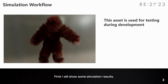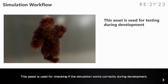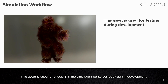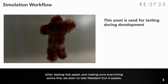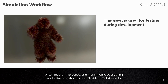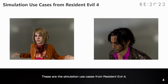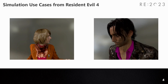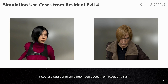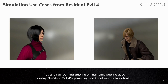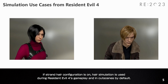First, some simulation results will be shown. This asset is used for checking if the simulation works correctly during development. After testing this asset and making sure everything works fine, we start to test the Resident Evil 4 assets. These are the simulation use cases from Resident Evil 4, including additional ones. If strand hair configuration is on, hair simulation is used during Resident Evil 4's gameplay and in cutscenes by default.